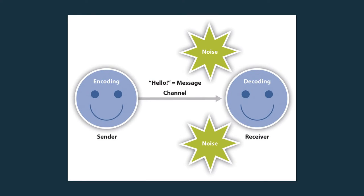In Unit 1 of this course, you learned the two models of understanding the process of communication: the linear model and the transactional model. The linear model shows communication in its simplest form — the basic elements of the process: the sender, the message, the channel, the receiver, and the noise.